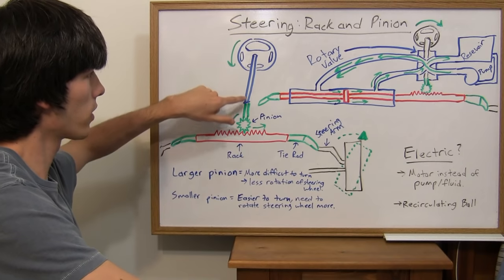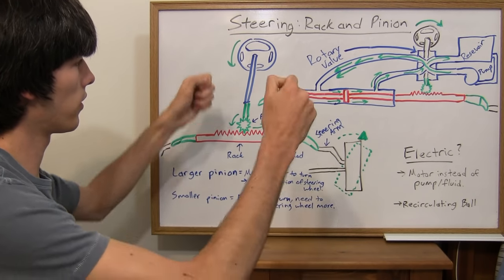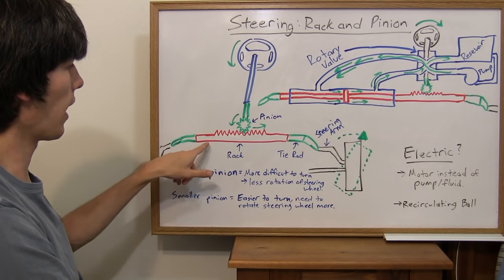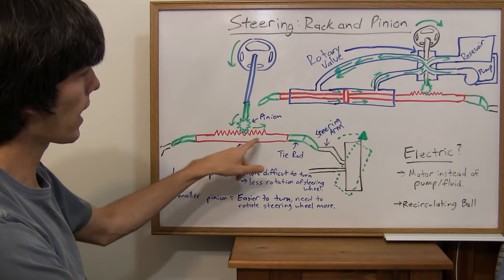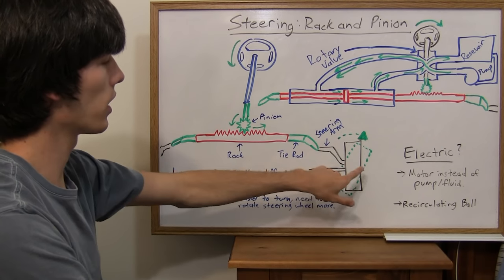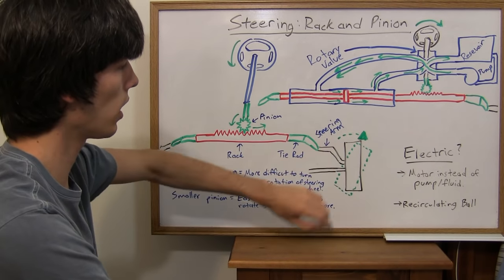So you have this shaft coming from the steering column, so there's your wheel. And then at the end of that there's a pinion and then there's a rack. Now this rack is connected with a tie rod and a steering arm which connect to your tire, the wheel hub.